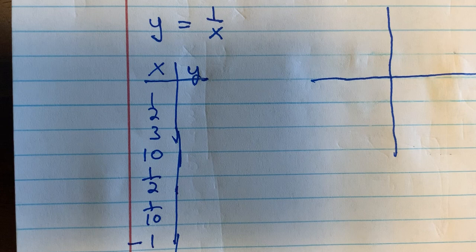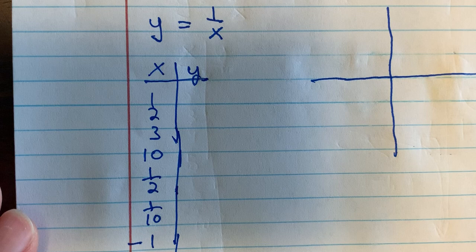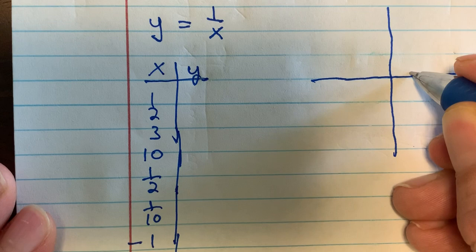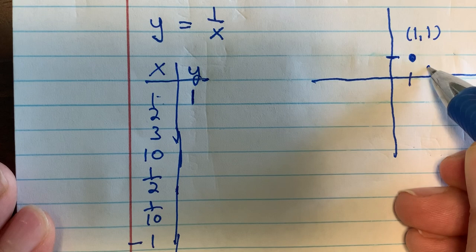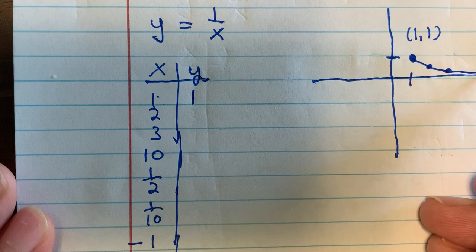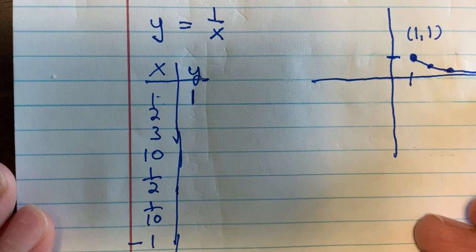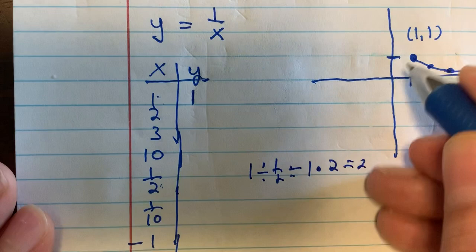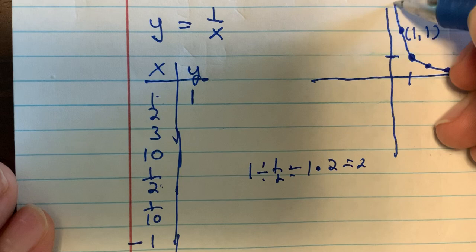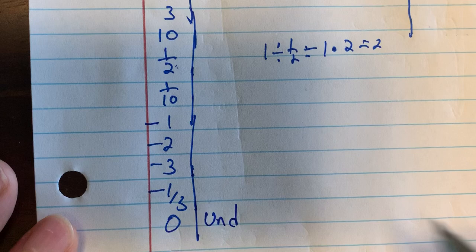Hopefully you graphed something like this. When x is 1, y is 1 — that's one of our important points, (1, 1). As x gets bigger and bigger, the y values get smaller and smaller, getting close to 0 but never quite reaching it. When x is a fraction like 1/2, y goes up to 2. When x is 0, y is undefined, because you're not allowed to divide by 0.